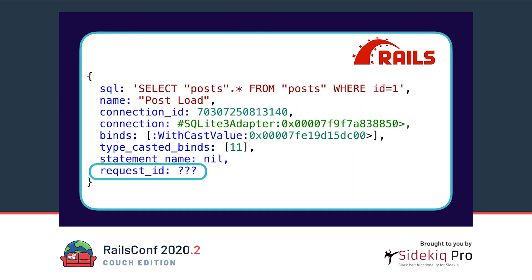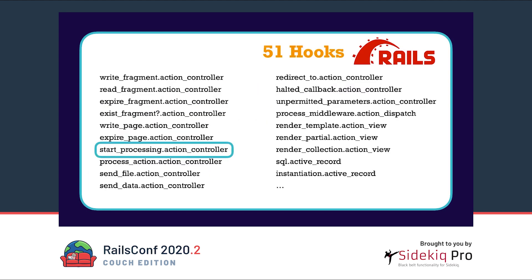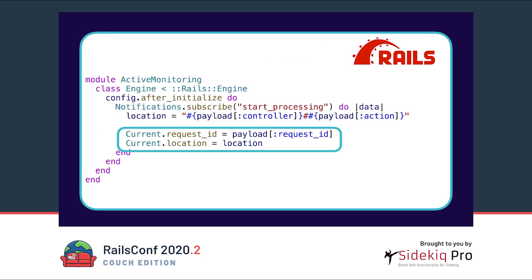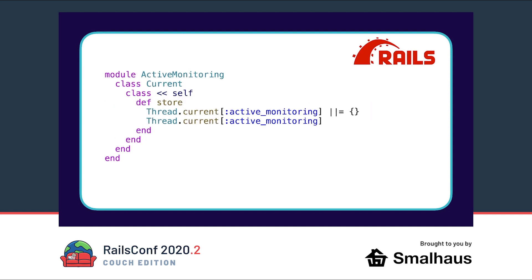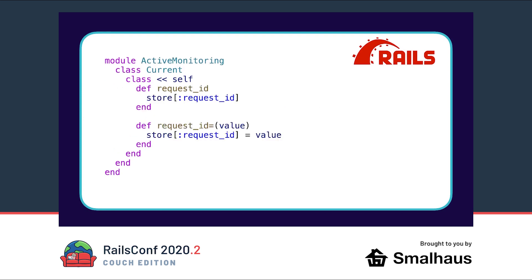The last step of processing our data is grouping. We would like to see which queries get executed by which controller action to identify potential problems. The payload of the SQL query event does not contain a request ID, because ActiveRecord is a standalone framework — we can use it in migrations, background jobs, or even without Rails. We can subscribe to the start processing event to fill a cache which we later read when storing the ActiveRecord metrics. We use current attributes, which has a location and a request ID attribute. Current attributes is implemented in ActiveSupport, but we can also implement it ourselves by storing a hash in the current thread with getter and setter methods.